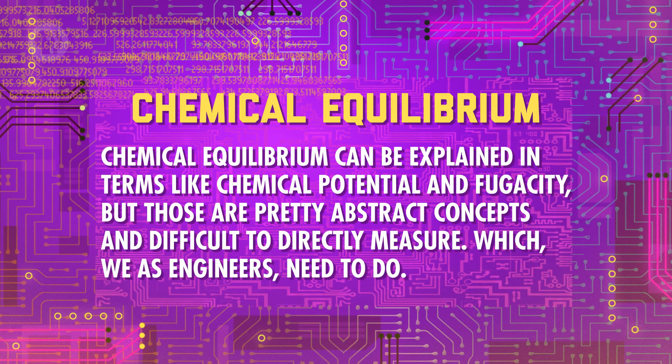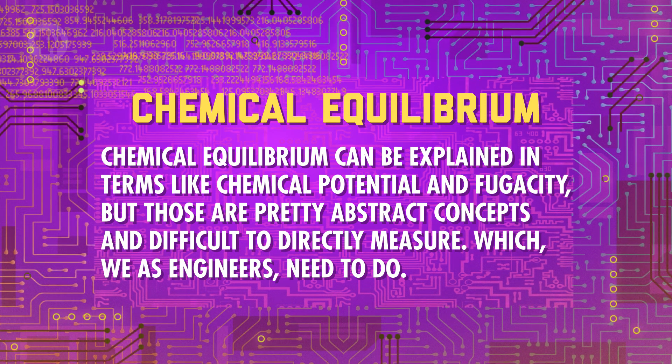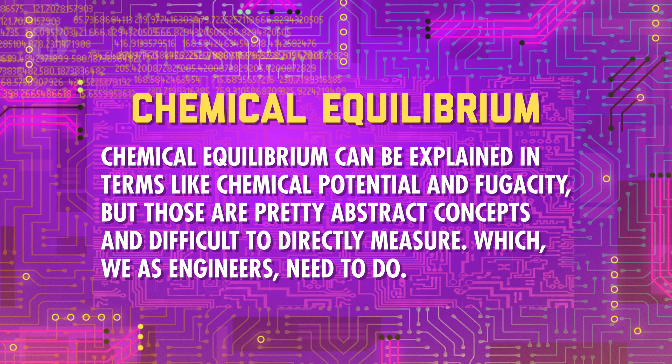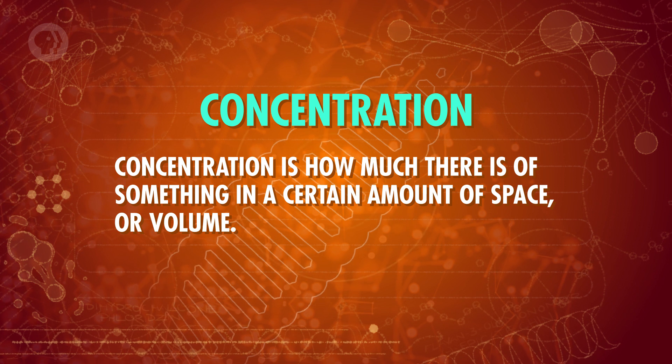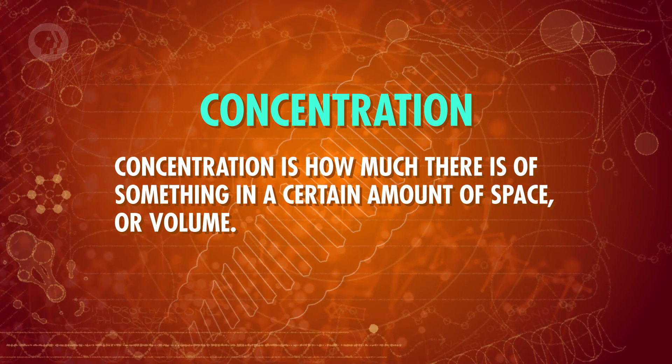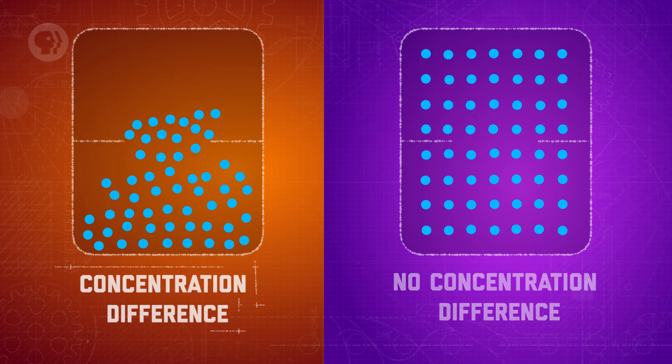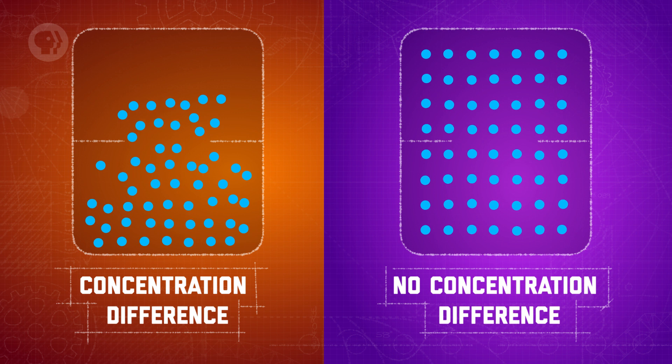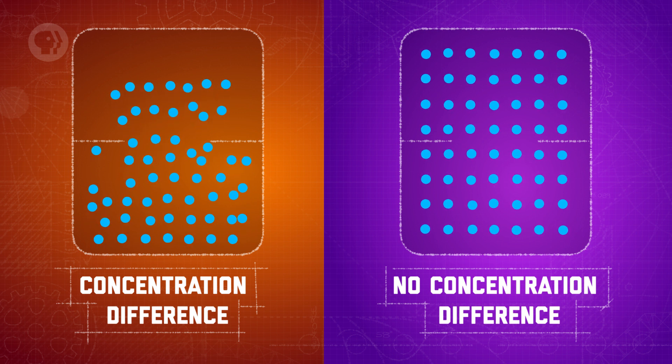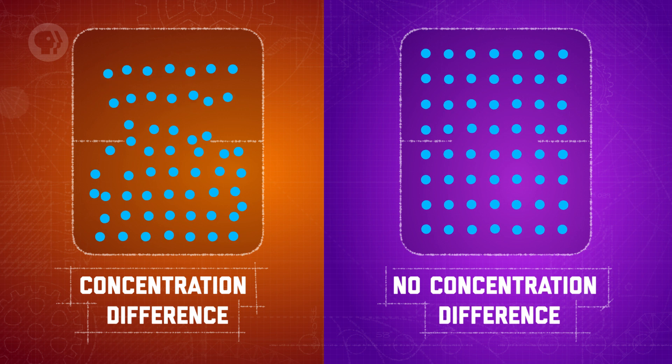Chemical equilibrium can be explained in terms like chemical potential and fugacity, but those are pretty abstract concepts and difficult to directly measure, which we as engineers need to do. So for our purposes, a better way to explain chemical equilibrium is to approximate it in terms of concentration. Simply put, concentration is how much there is of something in a certain amount of space or volume — here, mass per volume. For something to reach chemical equilibrium, it's going to need to have the same concentration throughout. That means particles won't move from one location to another within a fluid if there isn't a concentration difference. No concentration difference, no mass transfer. If there is a difference, then mass will move from the higher concentration to the lower one.